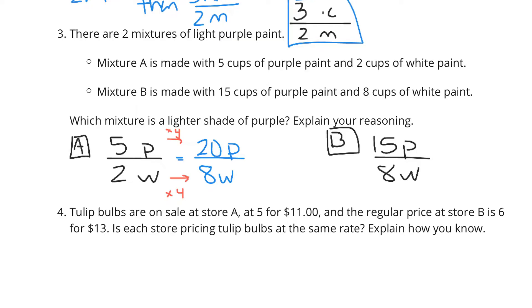Now, more purple would be stronger purple. And so the lighter shade of purple here is B. B is lighter. There is less purple for the same white.